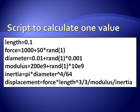RAND of 1 gives us one uniformly distributed random number between 0 and 1. So we do the same thing for the diameter and the modulus. That gives us three random numbers. We calculate one moment of inertia based on that diameter. And then we calculate one displacement. That's it.